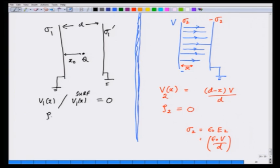Rho 1 is equal to q delta (x minus x naught) delta (y minus y naught) delta (z minus z naught) if this position is that.